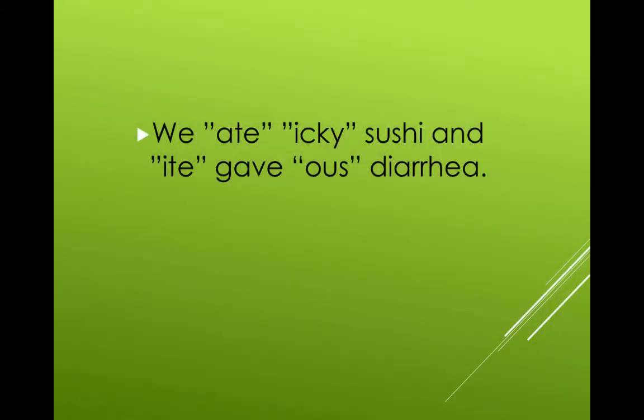A rhyme that you can use to remember the polyatomic acid rule is, we ate icky sushi and ite gave us diarrhea. It links ate ending polyatomic acids with the ick ending and ite ending polyatomic acids with the ous ending.